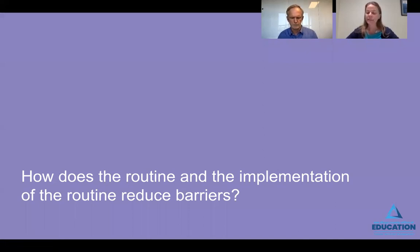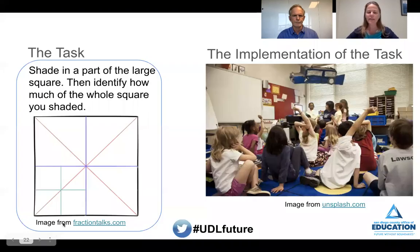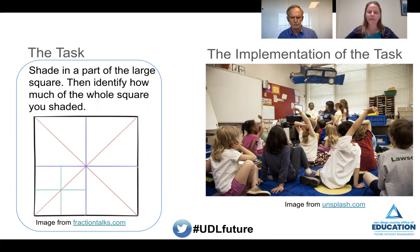As we look at how the Same and Different routine and its implementation reduce barriers, we want to first take a moment to clarify what we mean by the routine and its implementation. When we talk about the task or routine, we mean the problem, exercise, or question that students will be engaged in thinking about — for example, 'shade in a part of the large square, then identify how much of the whole square you shaded,' or the purple and gray squares we were just looking at. When we talk about implementation, we're thinking of the teacher moves that surrounded the task: the questions asked, whether students worked together or alone, and whether the teacher had students write things down or record as students shared aloud.